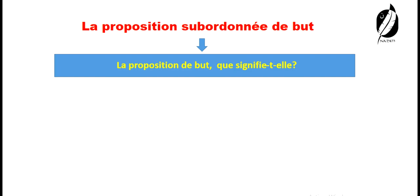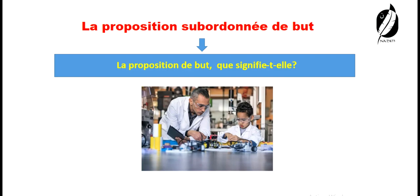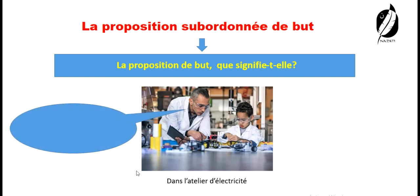La proposition de but, que signifie-t-elle ? Faites attention à cette image. Qu'est-ce que vous voyez ? Alors, deux personnages. Ils sont dans l'atelier de l'électricité. Le chef d'atelier, bien le professeur, et un élève. Ils sont en train de préparer et de travailler quelque chose de l'électricité.